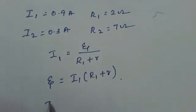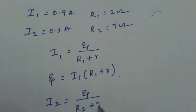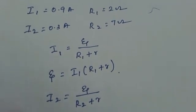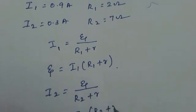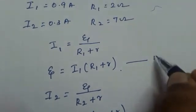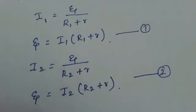Similarly I can write it for I2 also. I2 is equal to ε by R2 plus r. So it is ε is equal to I2 into R2 plus r. This one I am going to take it as equation 1 and this one I am going to take it as equation 2.